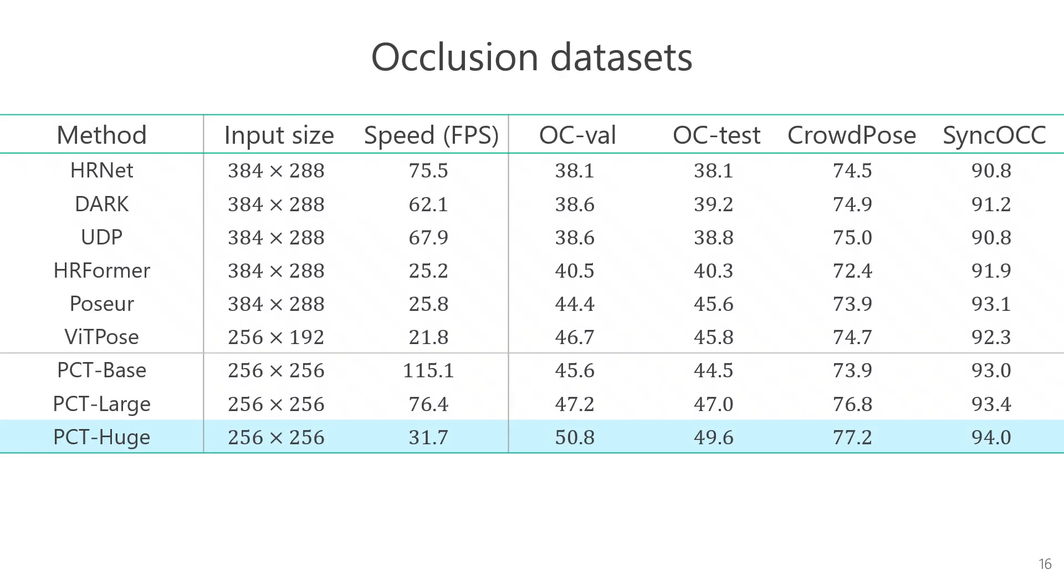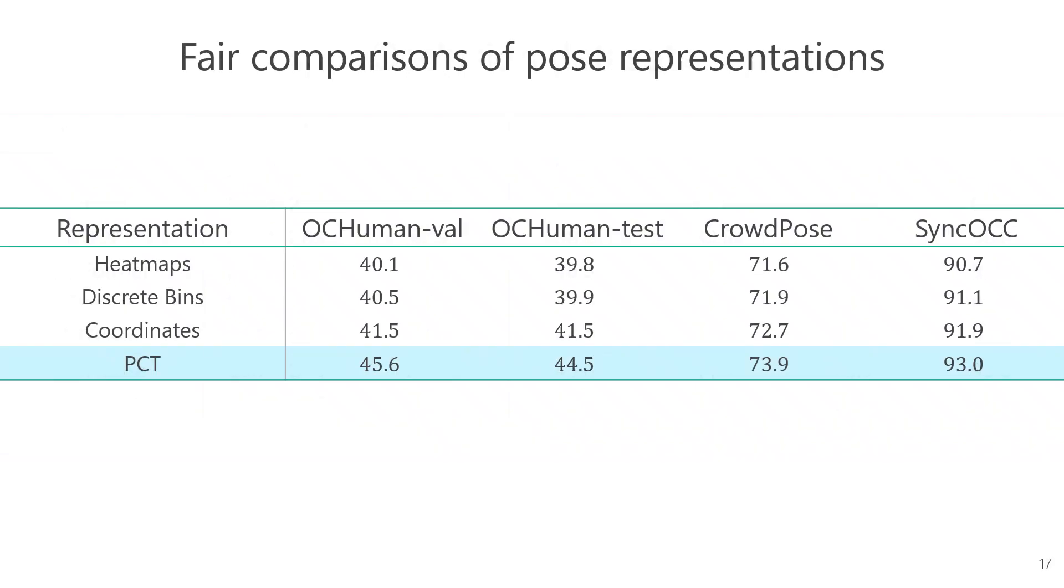On the occlusion dataset, our method has achieved a significant improvement over existing methods. This can be attributed to the fact that our tokens have learned the substructures of poses. Under completely fair conditions, we compared different pose representations and demonstrated that our PCT approach performs the best.